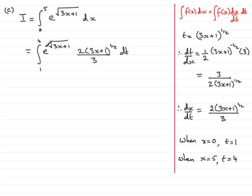Now we need to change this function of x into a function of t, because we're integrating with respect to t. So we have the integral then from 1 to 4. Now, the square root of 3x plus 1 was t, so this becomes e to the t. Then we have the 2 multiplied by 3x plus 1 to the half. That was t, so we have 2t, and that's over 3, multiplied by, or integrated I should say, with respect to t.